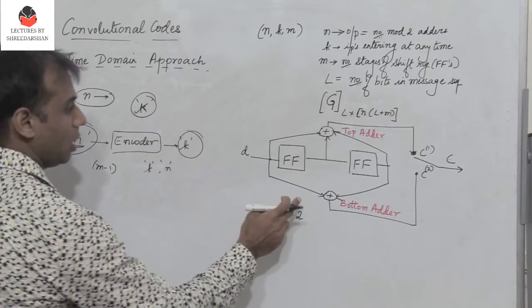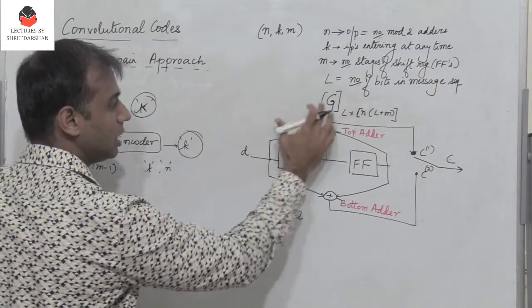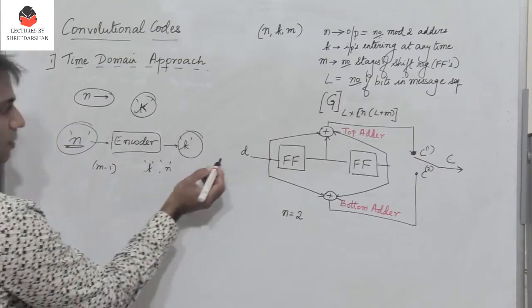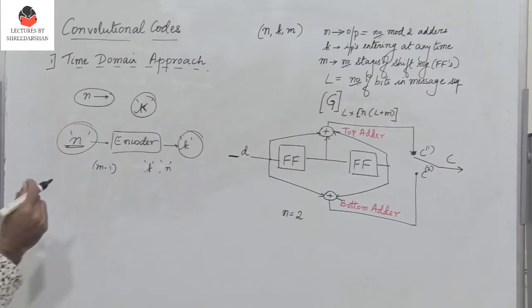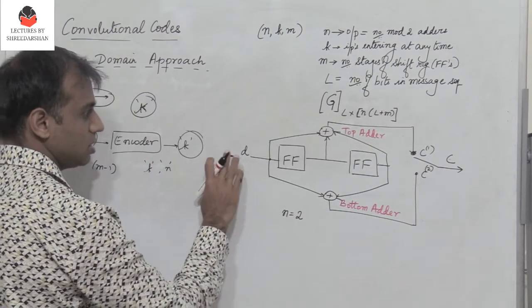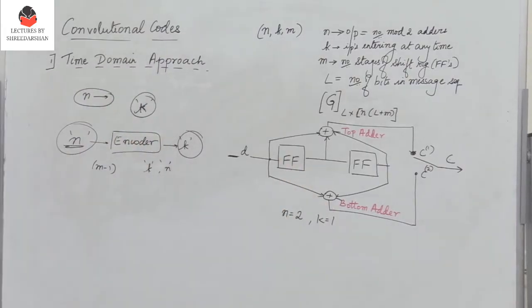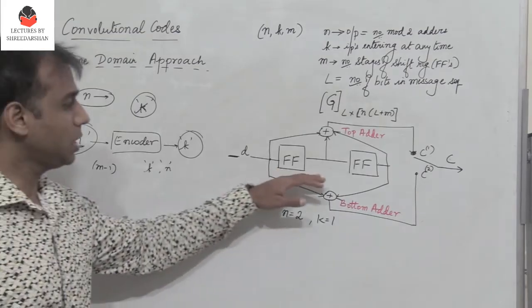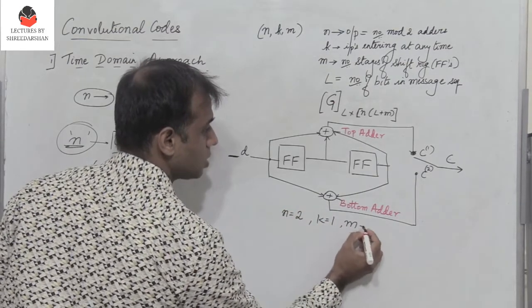k is the number of inputs entering the convolutional encoder at a given time, which is usually 1. Here the message D enters the encoder bit by bit, so k equals 1. N is the number of stages of the shift register, or equivalently the number of flip-flops in the encoder. In this example, N is also equal to 2.